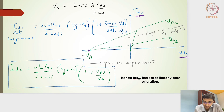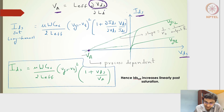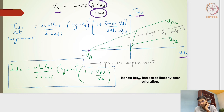VA by definition is a process parameter, given by L_effective multiplied by the incremental change in VDS with respect to the incremental change in LD — essentially the ratio dVDS/dLD scaled by L_effective. This is the Early voltage for the MOSFET.